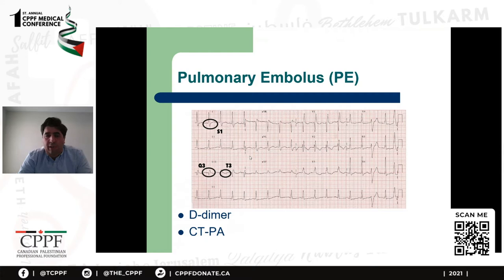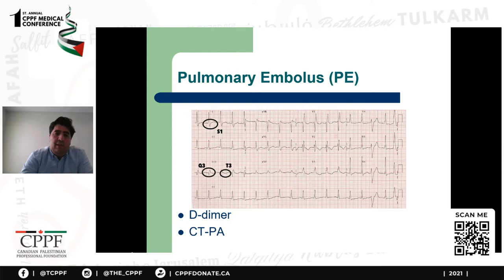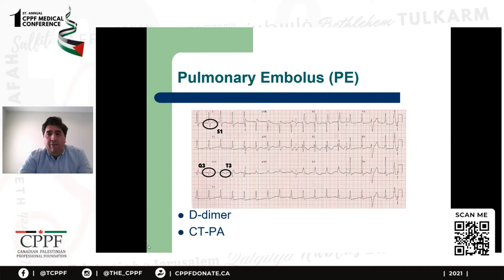If the suspicion is low to intermediate, a D-dimer is a very helpful test — if it comes back negative, it helps rule out pulmonary embolism. To confirm the diagnosis, you usually need a CT pulmonary angiogram, which can show the actual thrombus in the pulmonary artery. Treatment is with anticoagulation. If the patient is very sick with near hemodynamic collapse, we discuss either thrombolytics or invasive retrieval of the thrombus, but that's in a very rare subset of patients.